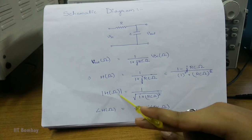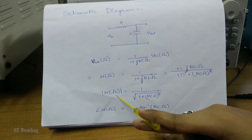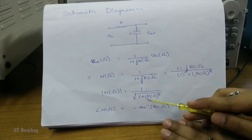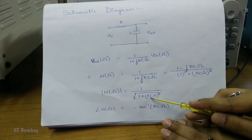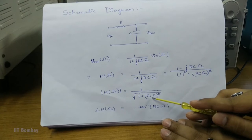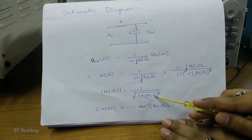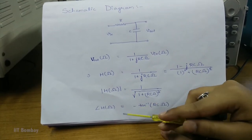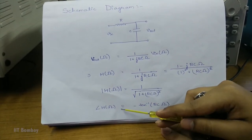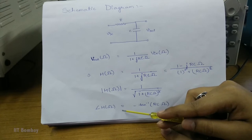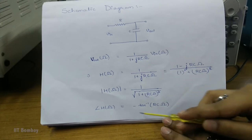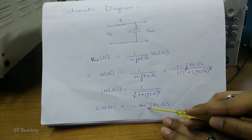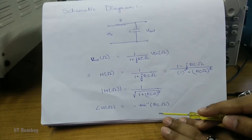Now, the modulus of H of Omega is equal to 1 upon the square root of (1 plus (RC·Omega)²), and the argument of H of Omega is given by minus tan⁻¹(RC·Omega).